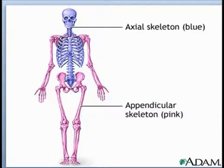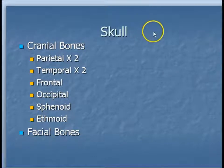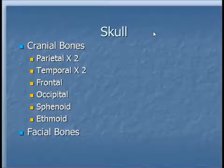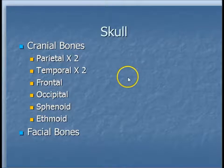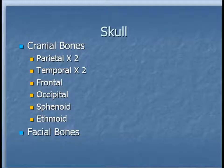We're going to start looking at the individual bones of the body and different processes or parts of each of those bones that you're required to identify. We're going to start with the skull. Your skull, although we call it the skull, is actually made up of several different bones. You have two parietal bones, two temporal bones, a frontal, occipital, a sphenoid, and an ethmoid bone. The skull is also comprised of the various bones that make up your face. We're going to start with the cranial bones, and then move on to some of the different types of facial bones.